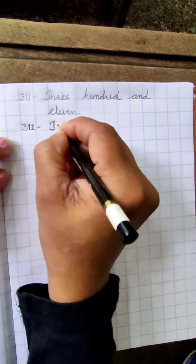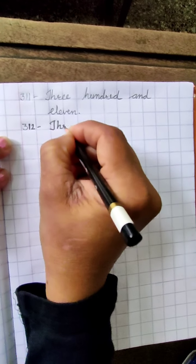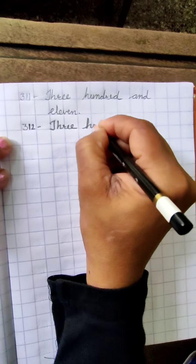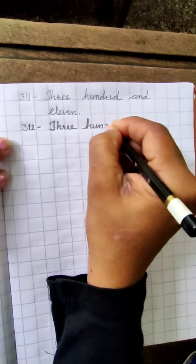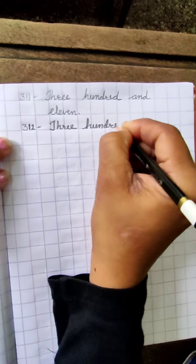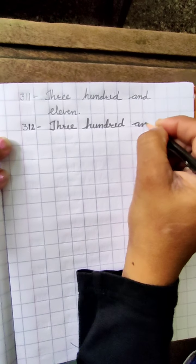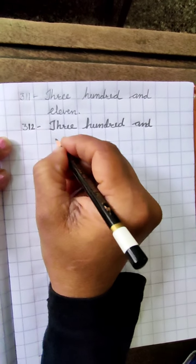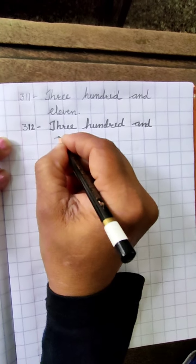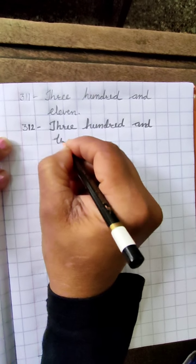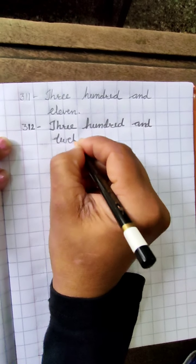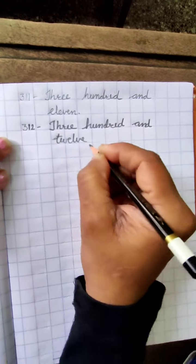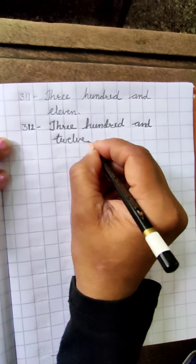THREE HUNDRED — T-H-R-E-E, H-U-N-D-R-E-D, 100 — AND T-W-E-L-V-E, 12. Three hundred and twelve, 312.